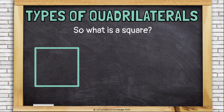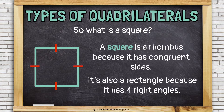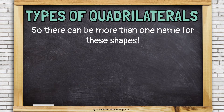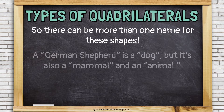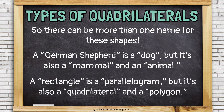So what is a square? A square is a rhombus because it has congruent sides, and it's also a rectangle because it has four right angles. So there can be more than one name for these shapes — just like a German shepherd is a dog, but it's also a mammal and an animal. A rectangle is a parallelogram, but it's also a quadrilateral and a polygon.